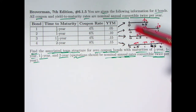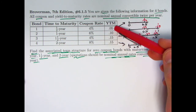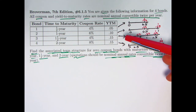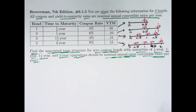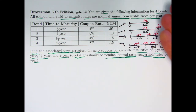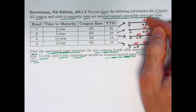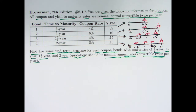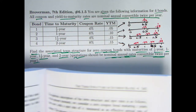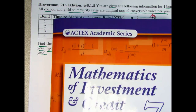We can think about the equation of value using these yields to maturity as nominal annual rates — divide by 2 to get the effective semi-annual yields. We can think about an equation of value to find the prices of these things. However, before we do that, we better understand what it means to find the associated term structure for zero-coupon bonds. These are not zero-coupon bonds, though you could sort of think of the first one as a zero-coupon bond if you lump together the coupon with the redemption value. Let's go to page 343 of Broberman's book, the 7th edition of The Mathematics of Investment and Credit.